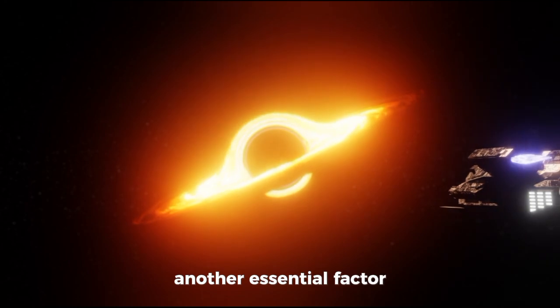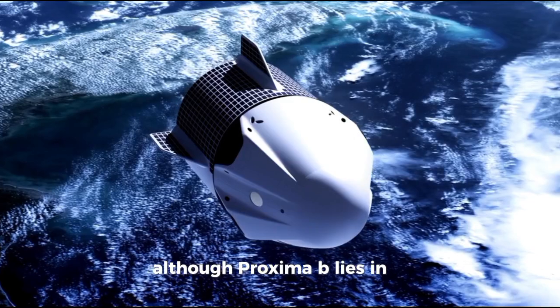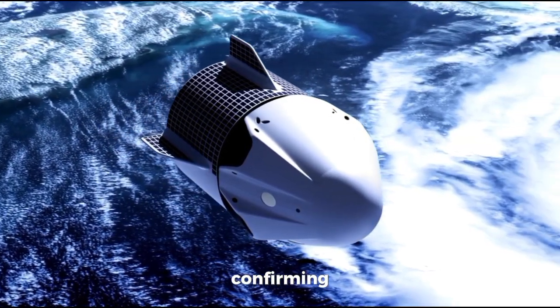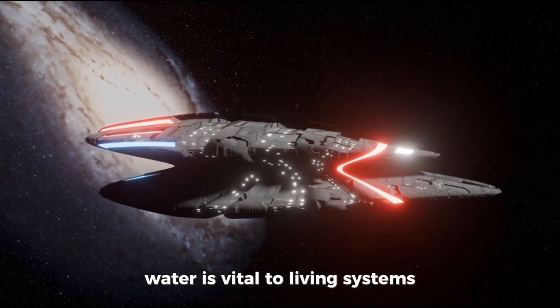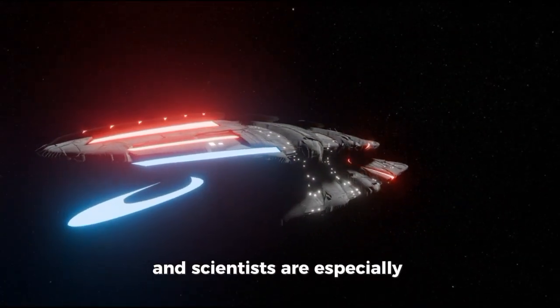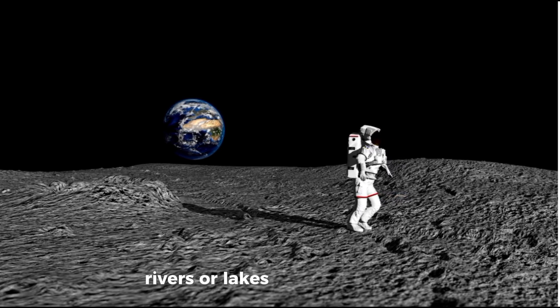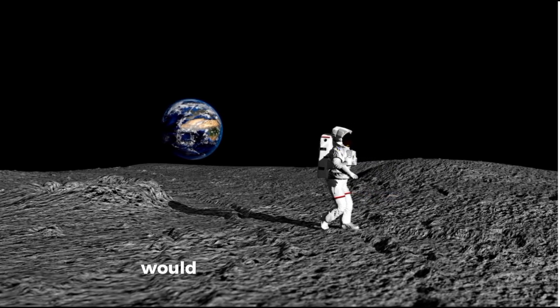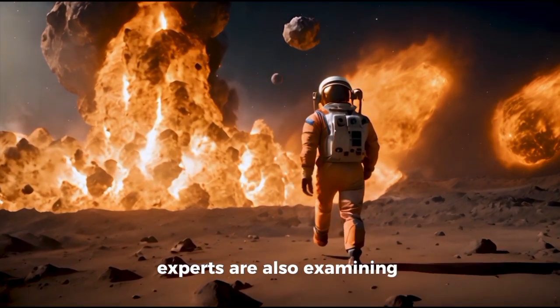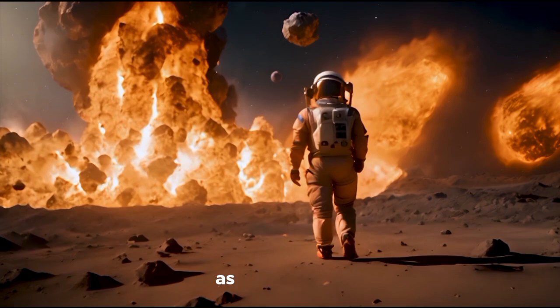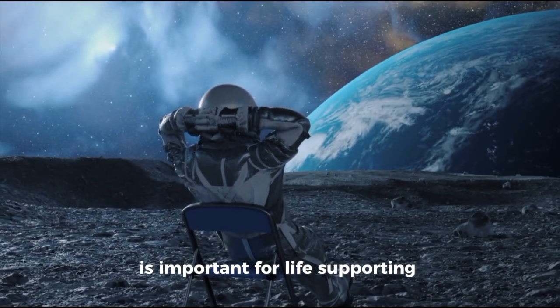Another essential factor influencing habitability is the presence of water. Although Proxima b lies in a favorable zone, confirming whether it holds sufficient water is crucial. Water is vital to living systems. Scientists are especially seeking evidence of it in liquid form: oceans, seas, rivers, or lakes. Discovering this would significantly bolster the planet's viability. Experts are also examining whether water might exist as ice or vapor, since its presence in any state is important for life-supporting processes.